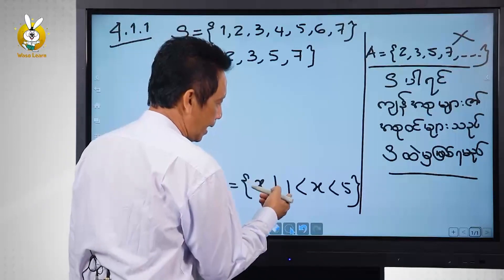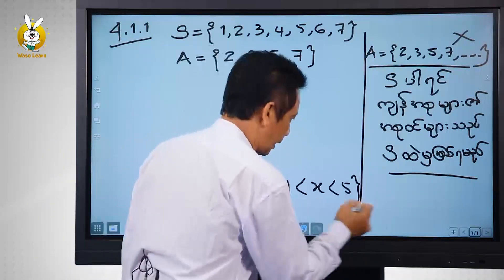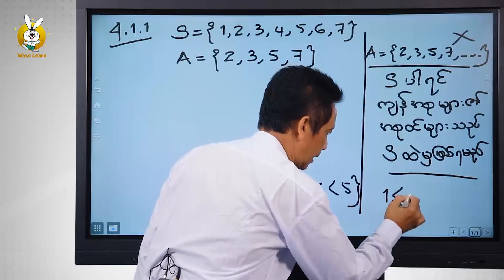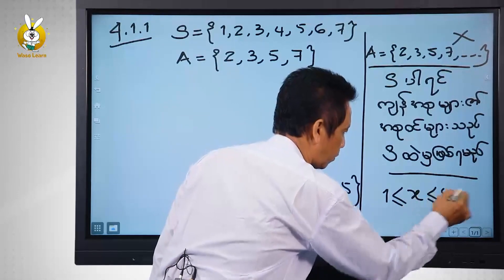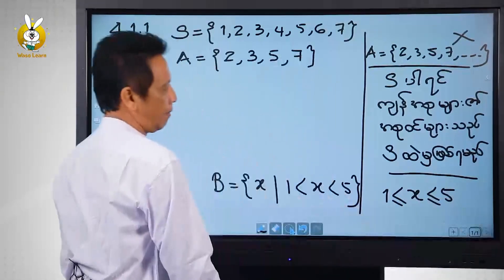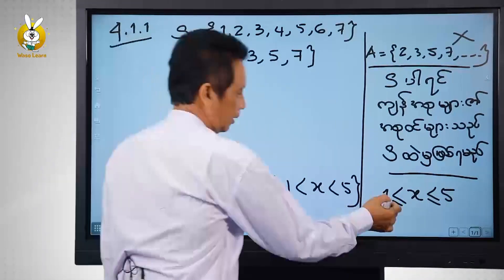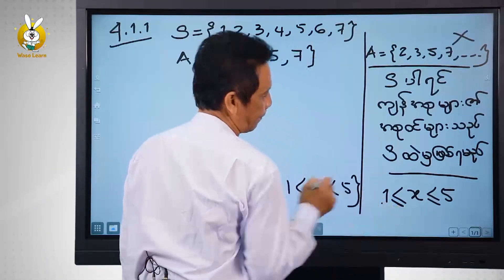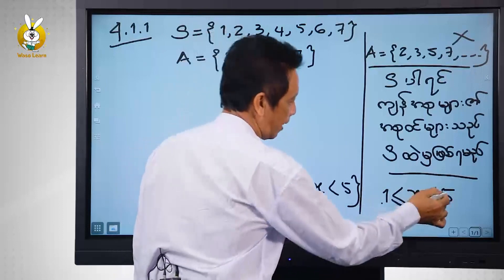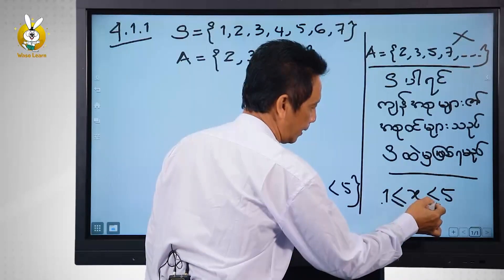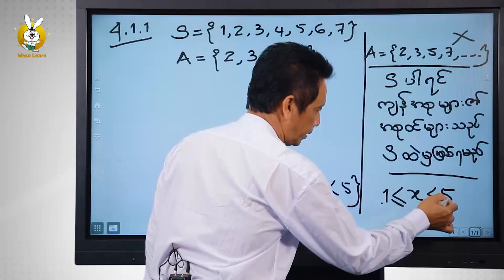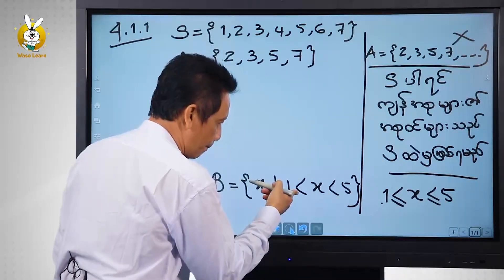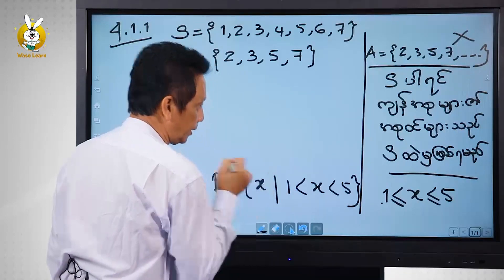Say one lesson: equal and equal and equal to five. Then if you're not able to do the first lesson, you can do it.